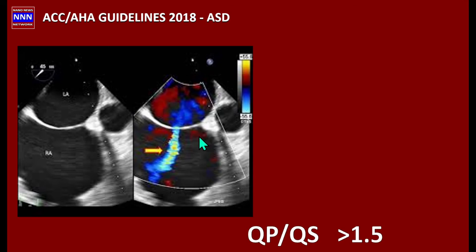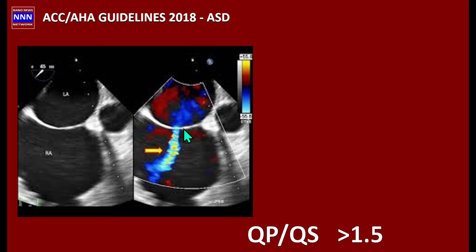Here is an example of transesophageal echocardiography, where the left atrium is close to the transducer. The right atrium appears grossly dilated, and a central jet identifies exactly where the atrial septal defect is. This is very useful for deciding what type of device to use, how large it should be, and how to position it.